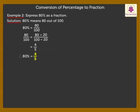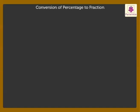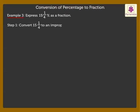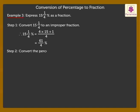Now, let's solve a different type of example. Example 3: Express 15 and 1 upon 4% as a fraction. Step 1: Convert 15 and 1 upon 4 to an improper fraction. Therefore, 15 and 1 upon 4% is equal to 4 into 15 plus 1 upon 4, which is equal to 61 upon 4%.